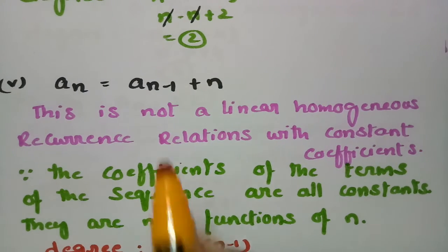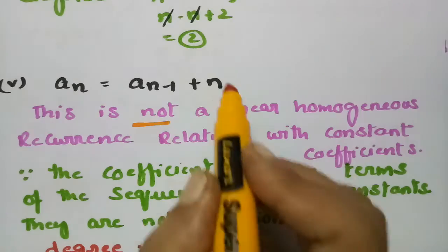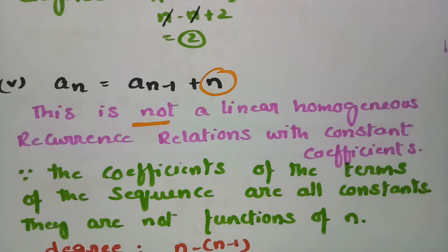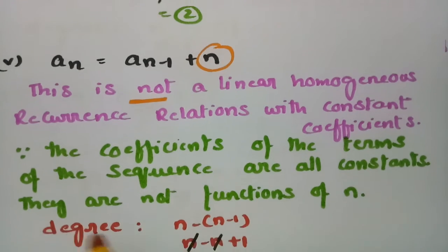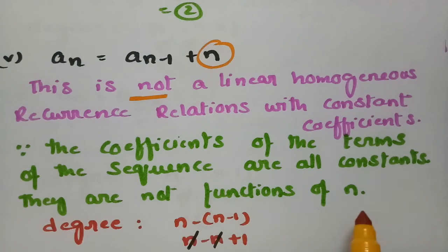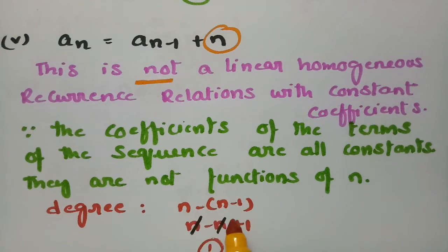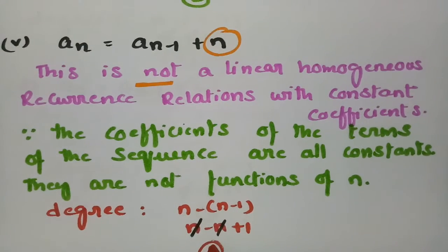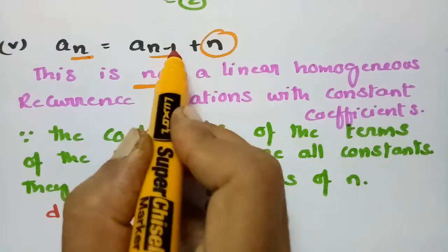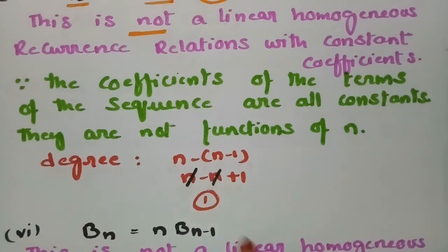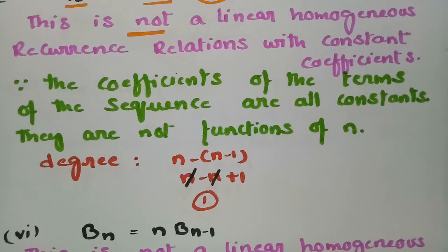The next example has all coefficients as constants and they are not functions of n, but this is not a linear homogeneous recurrence relation. The degree is the difference between the greatest and the least subscript, that is n minus (n−1), so the degree is equal to 1.